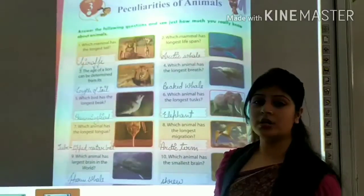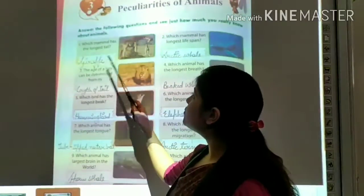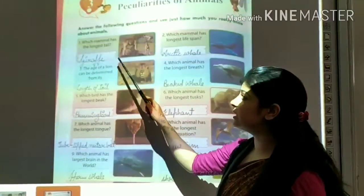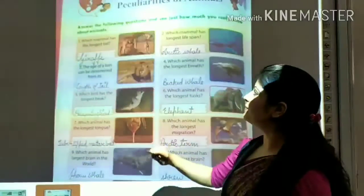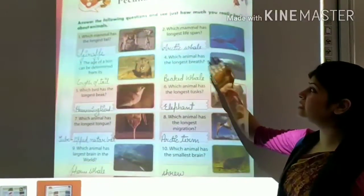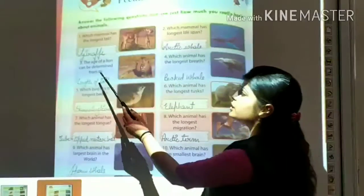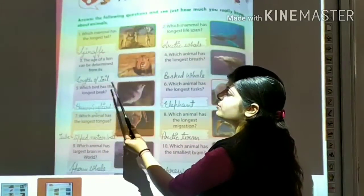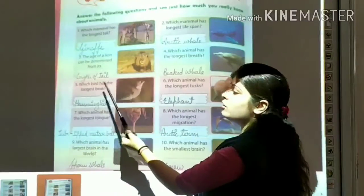So, let's go for question number 1. Which mammal has the longest tail? It's giraffe. Which mammal has the longest lifespan? It's Arctic whale. The age of an animal can be determined from its length of tail.